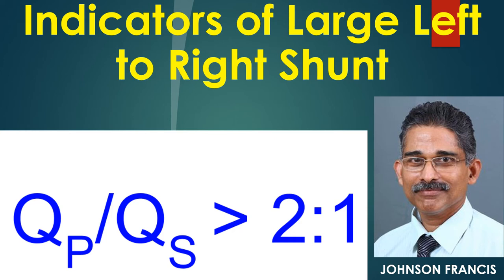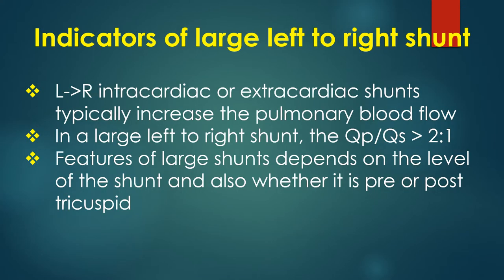Indicators of a large left to right shunt are cardiac enlargement, presence of flow murmurs, third heart sound, and a wide pulse pressure in case of patent ductus arteriosus. Left to right intracardiac or extracardiac shunts typically increase the pulmonary blood flow. In a large left to right shunt, the QP to QS ratio — that is the ratio of pulmonary to systemic blood flow — is more than 2:1.